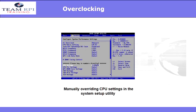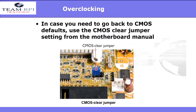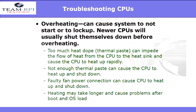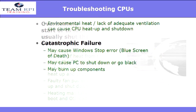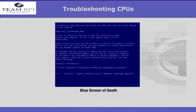We'll talk more about the BIOS later. Just in case you make a mistake in these settings and need to go back to the default, you can always use the CMOS clear jumper. Now let's talk about troubleshooting some common issues with CPUs, like overheating — perhaps you used too much heat dope or not enough, you may have a faulty fan power connection, or possibly you're running into what we'd label catastrophic failure, like the blue screen of death. These can all be indicative of problems with the CPU.